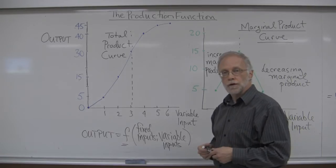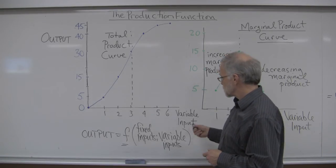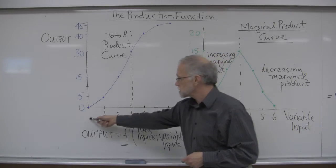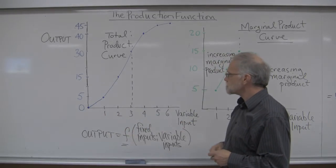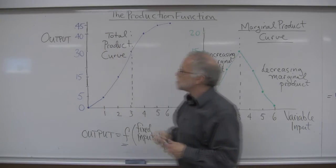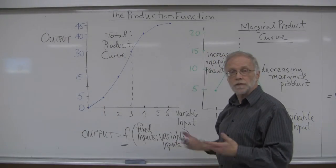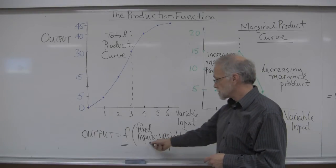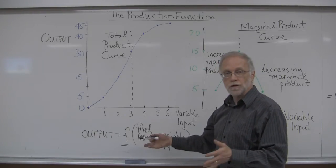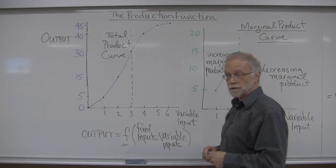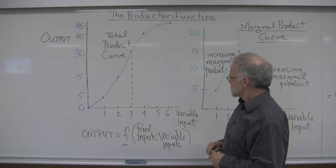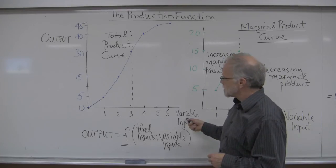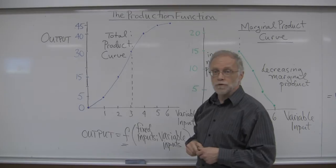We can illustrate that relationship just by graphing the variable input along this axis, and the amount of output that's produced by that variable input — that is, an input that we can vary in quantity. Obviously, the fixed inputs are fixed in quantity. That's why they're called fixed inputs.